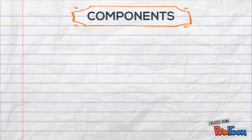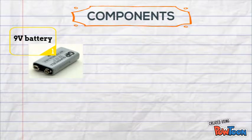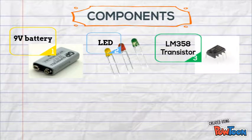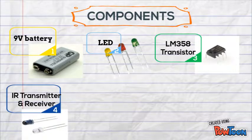Components for our circuit consist of a 9-volt battery, LED, transistor, IR transmitter and receiver.